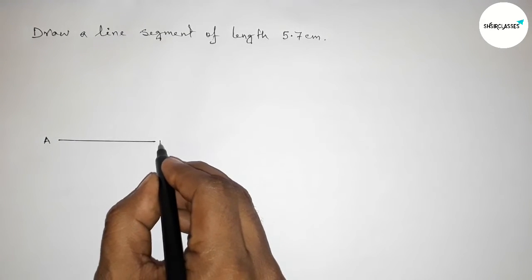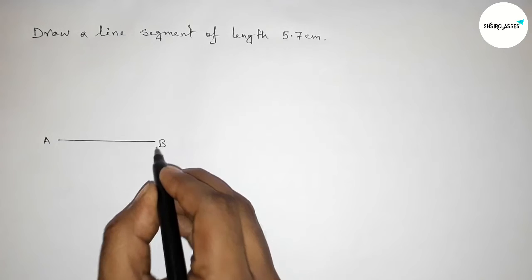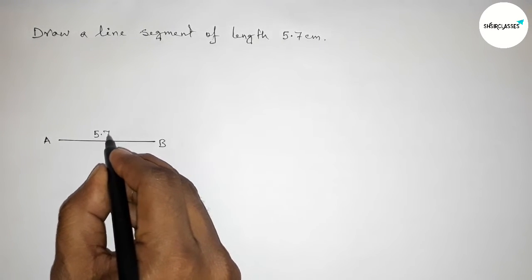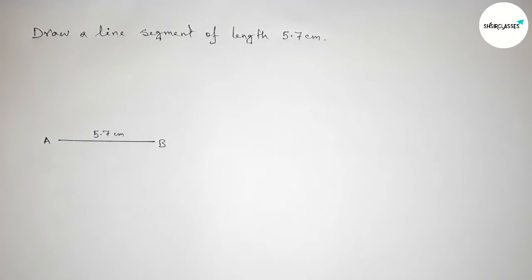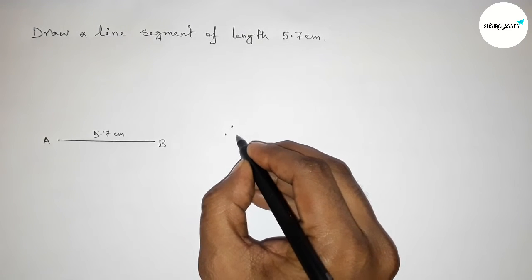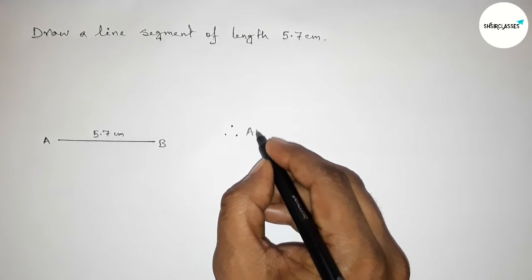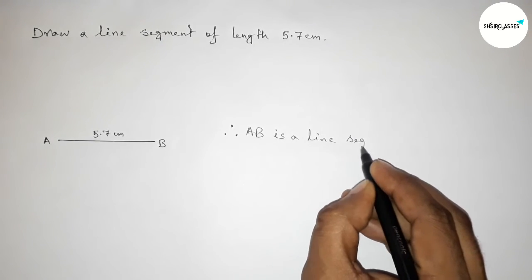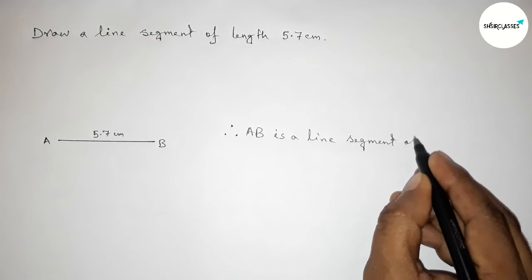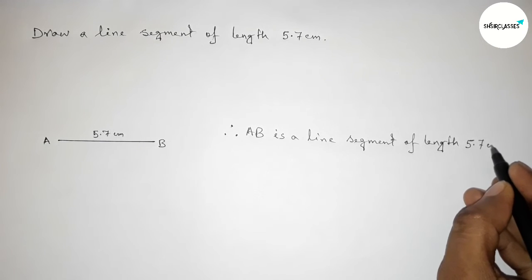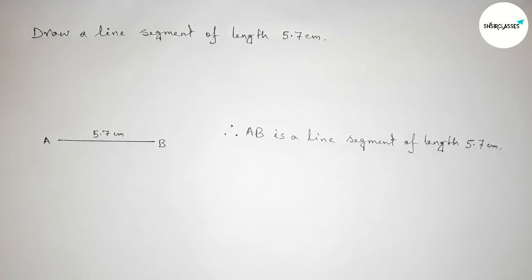Taking point A at the start and point B at the end, the length of AB equals 5.7 centimeters. Therefore, AB is a line segment of length 5.7 centimeters. That's all — thanks for watching. If this video is helpful, please share it with your friends.